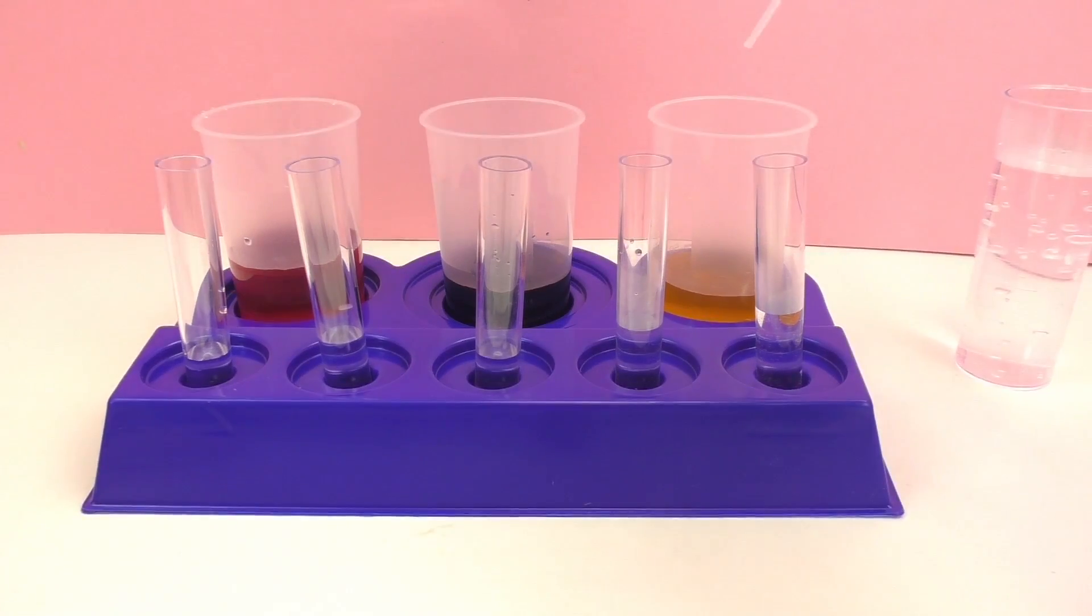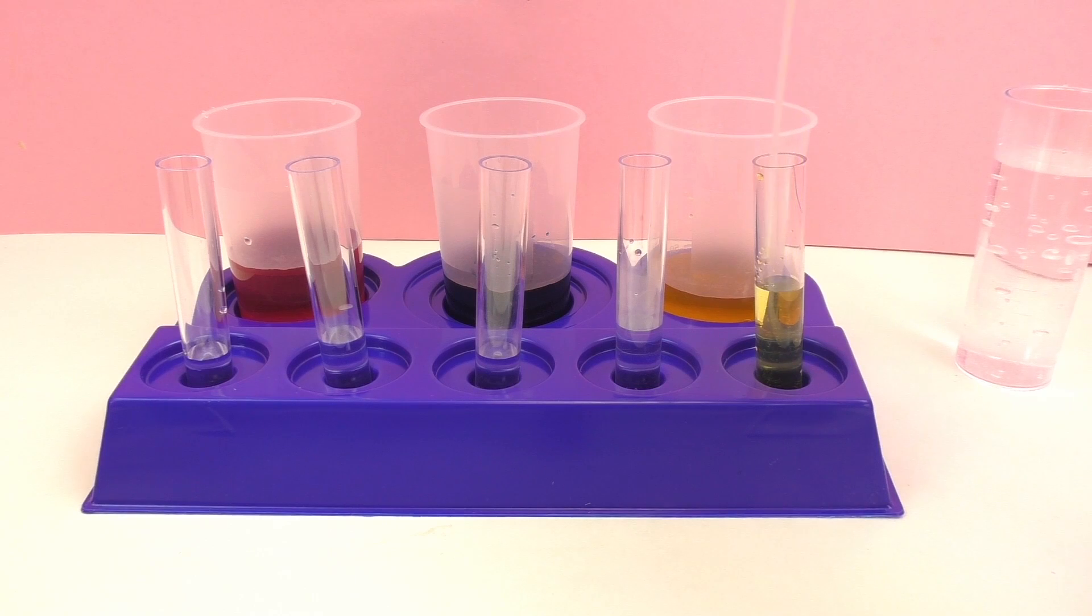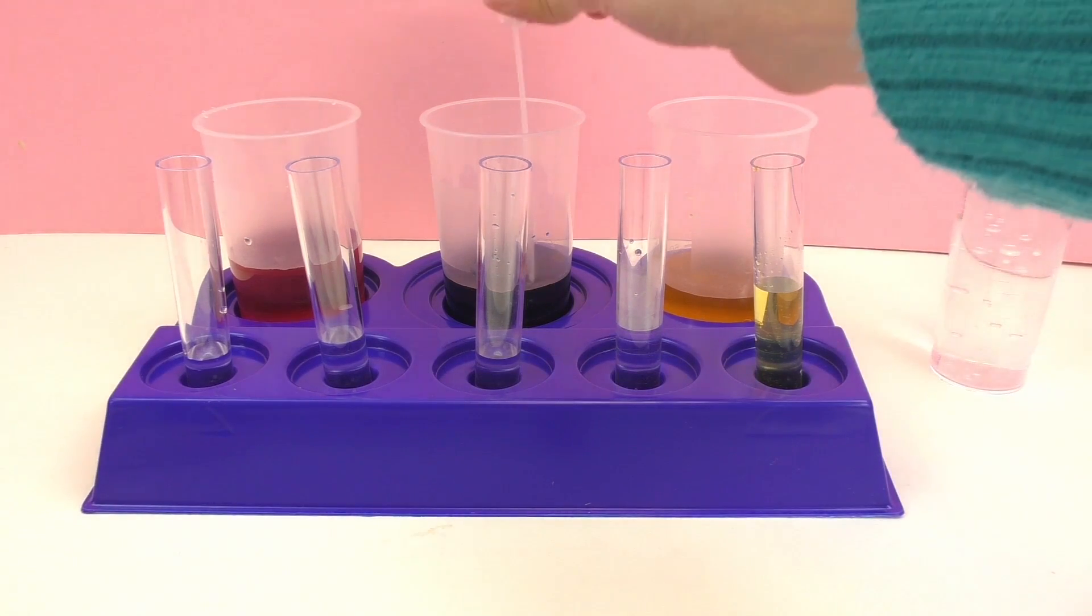So for our first experiment we're going to take a little bit of yellow and a little bit of blue and mix them together. I want you to think about what color you think this is going to make. So first off just squirt a little bit of yellow in there. Be sure to wash it out in between, and then some blue.